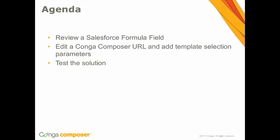Let's go ahead and review our agenda for today. We will review a Salesforce formula field and note the conditions set up to dynamically select certain templates based on what stage the opportunity record is in. Then we're going to edit a Composer URL and add some parameters that will help with the template selection process. And finally we'll test out the solution and make sure it's working correctly.